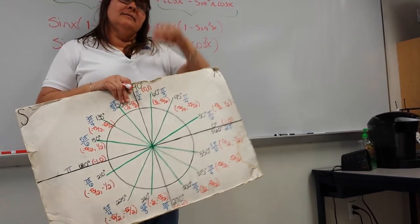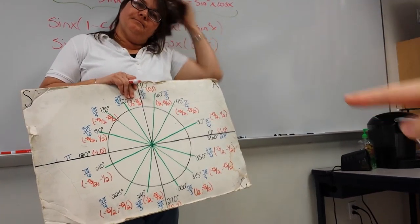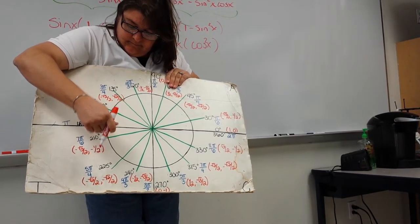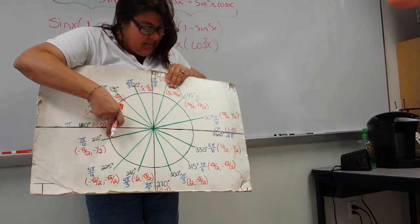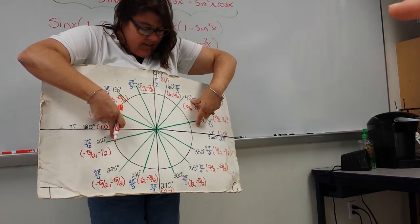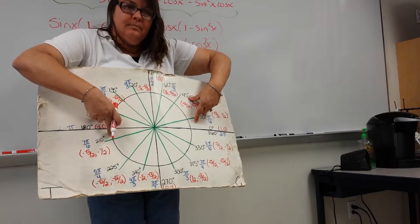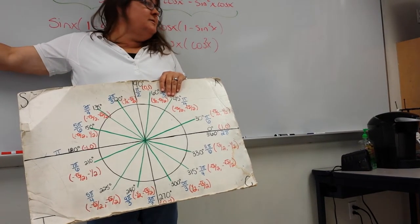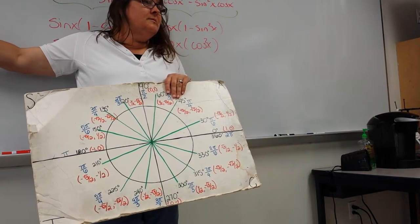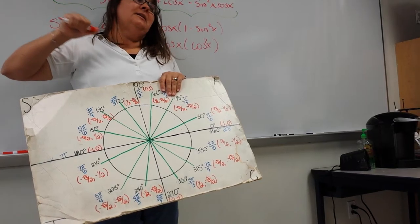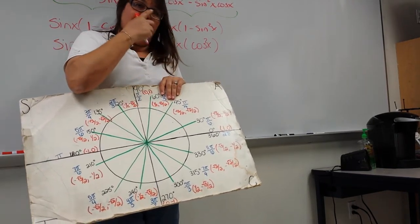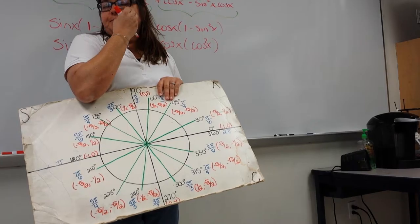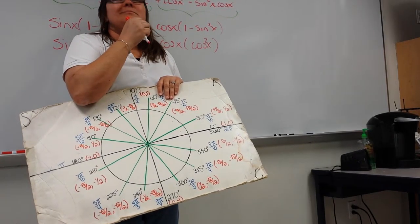Are those the only two answers? Yes. You have 26.6, which falls in the first quadrant between 0 and 90, and 206.6, which falls between 180 and 270 — both within 0 to 360. Those are your two answers.